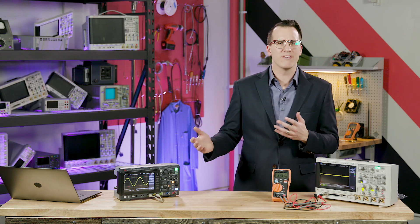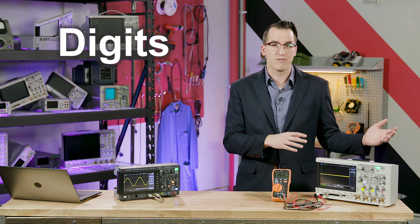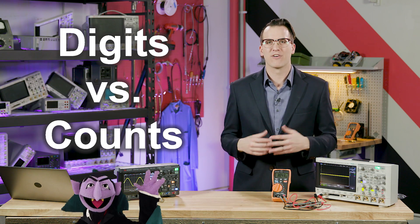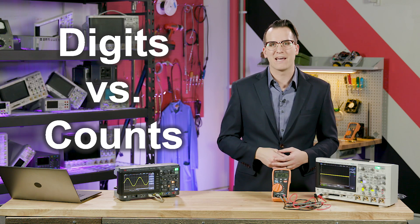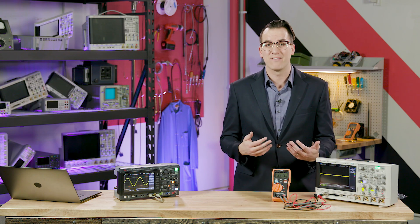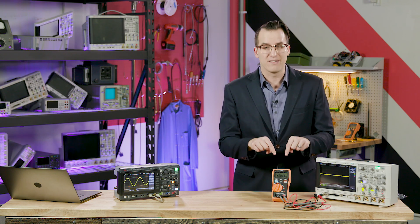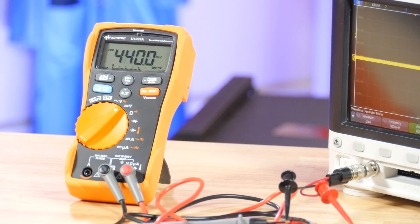The question was, what's the difference between the number of digits for a DMM and its count? For example, the 34470A that we gave away last week is a 7.5-digit DMM. The one we're giving away today is specced as a 3.5-digit multimeter.